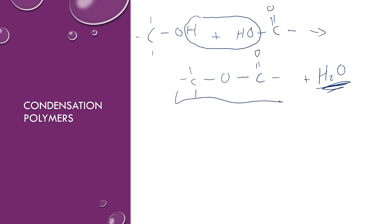In order to make a continuing polymer, these compounds also need a functional group on the other side, somewhere near the end, to have a continually growing polymer. But you can just have two particles combining into one, and that works as well.